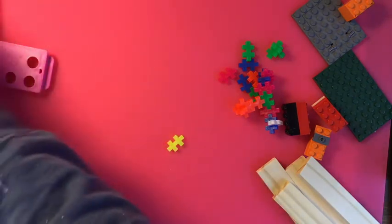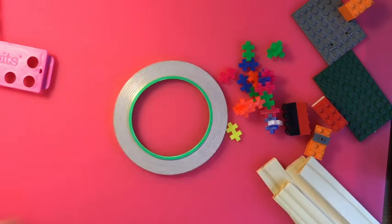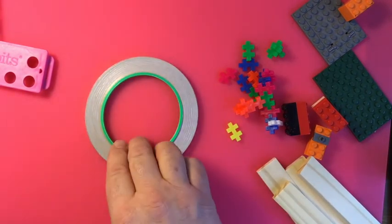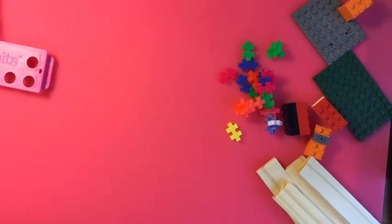You could take that a step farther and add in some copper tape to help them make circuits. There's a thing called paper circuits that people like to do. You can also just use foil.